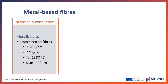Metallic fibers are produced from materials such as ferrous alloys, nickel, titanium, aluminium, or copper, among others. However, the most common ones are stainless steel fibers. They have good conductivity and higher melting temperature than conventional fibers, but they also present higher density, stiffness, and brittleness. Due to this, their application in garments must be carefully assessed.